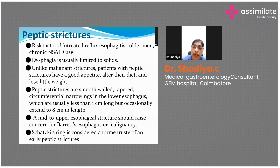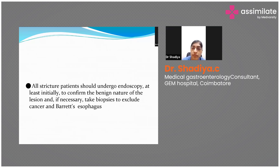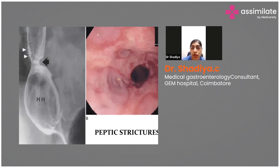These strictures are smooth-walled and tapered, usually less than one centimeter in length, but occasionally they can go up to eight centimeters. All stricture patients should undergo endoscopy at least once in a lifetime to confirm the benign nature of the lesion, and if necessary we take a biopsy to exclude presence of cancer or Barrett's esophagus. The endoscopic pictures show a peptic stricture where the lower end of the esophagus is narrowed with severe esophagitis around it. The barium esophagogram also shows a peptic stricture and a hiatus hernia.